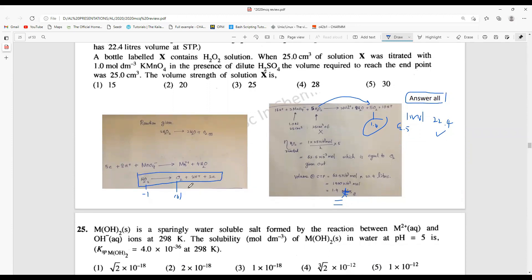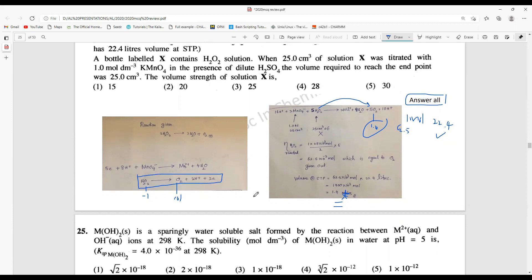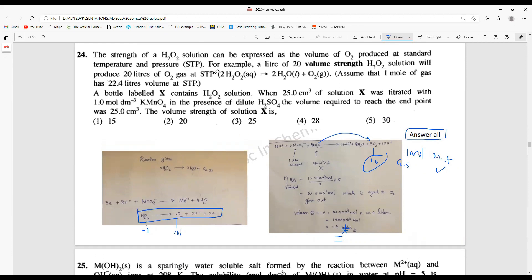This is the oxidation reaction for this particular mixture of MnO4 minus. However, they have given us this equation where two H2O2 molecules gives two water molecules and oxygen. This is confusing. That's the main issue here.